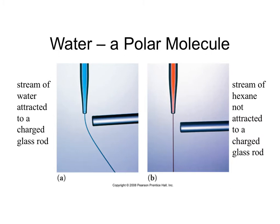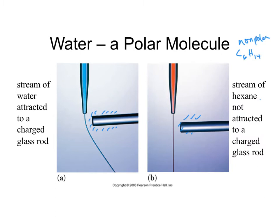Water is indeed a polar molecule. In an experiment, rubbing a cloth over a glass rod transfers electrons onto the rod's surface, giving it a negative charge. This pulls water molecules toward it. Hexane, on the other hand, is C6H14 — a non-polar molecule — and the same charged glass rod has no effect on the non-polar hexane as it streams through.